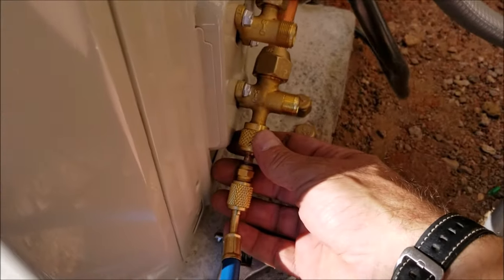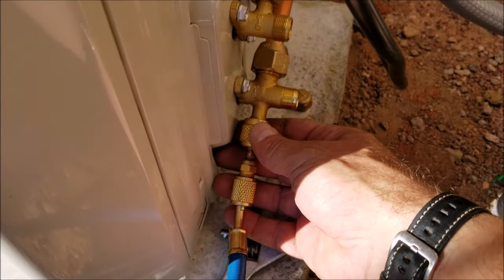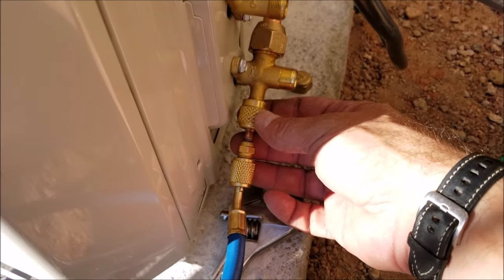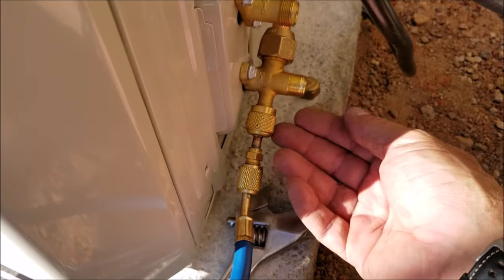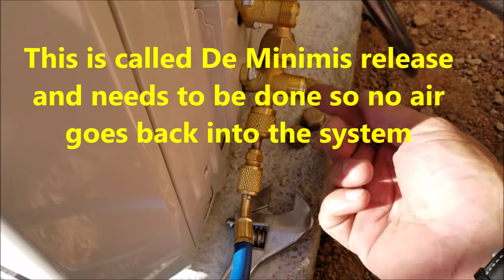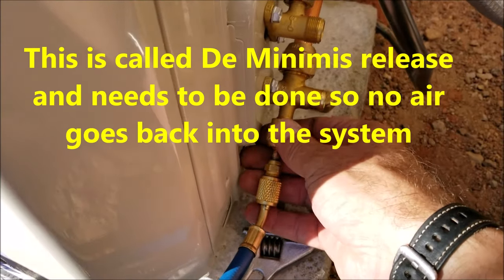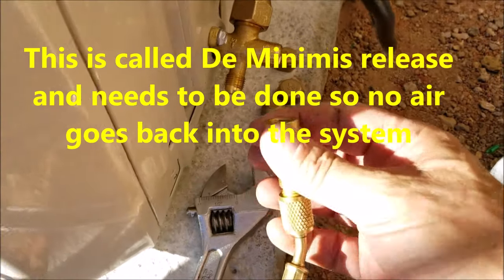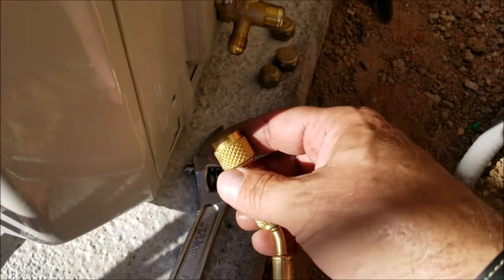The next step is to go ahead and let this off as quick as you can. A little bit of freon will come out, a little bit of refrigerant will come out, but that's okay. We just don't want to break the vacuum. So I'm just going to do this real fast. Okay, so that's off.